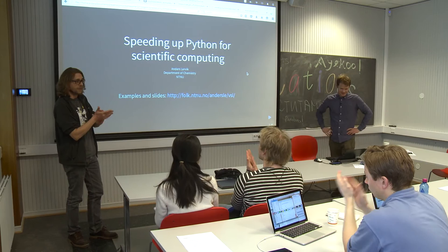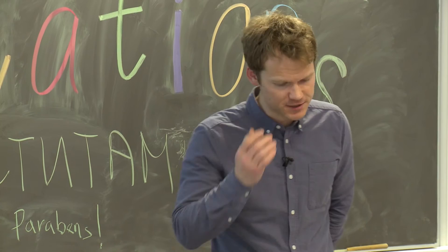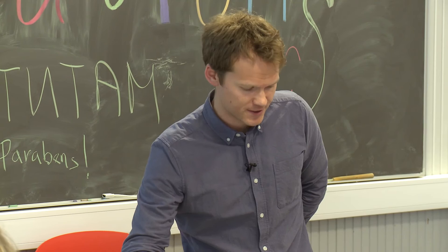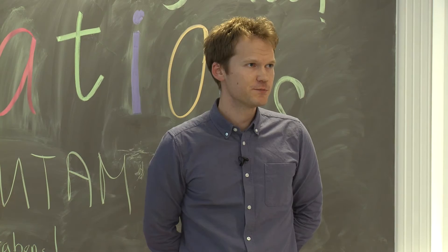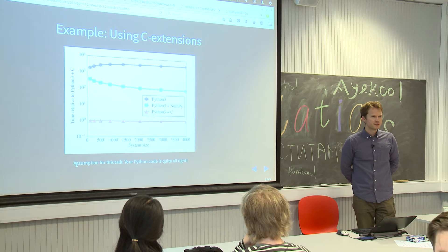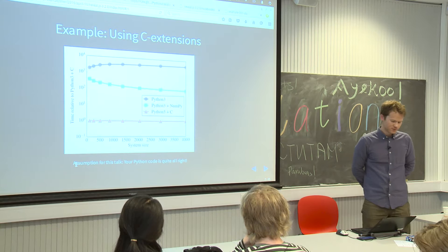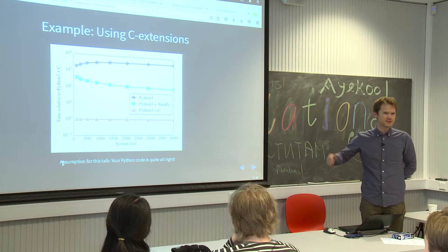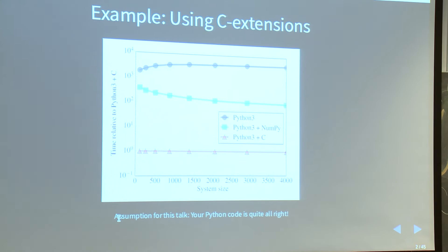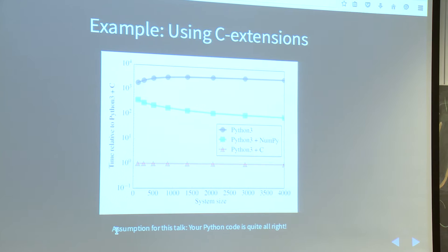I'm going to start by saying something about what I mean by the title. The assumption I will use in this talk is that the Python code you have is actually pretty good — almost as good as it can be in Python. So this talk will not be as much about how you can write better Pythonic code, but it's taking you to the next level. Your code is as Pythonic as it can be, but it's still a hundred times slower than what you would have in Fortran and C. We will go through some things you can do to approach C and Fortran speeds with Python.